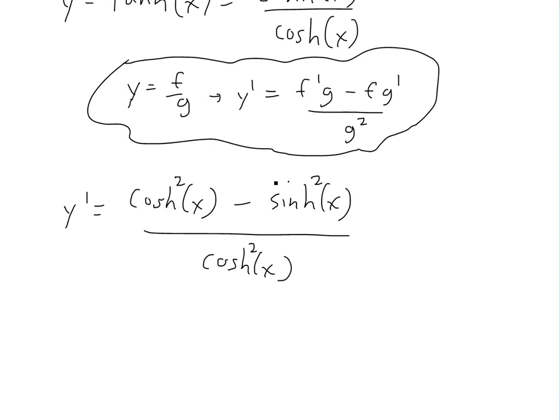So now we have this, and as I showed in my earlier video, this top part, the identity of this one, is just equals to 1. You can see proof of this in the video link below as well. So that equals to 1. So we'll be left with 1 over cosh squared of x.